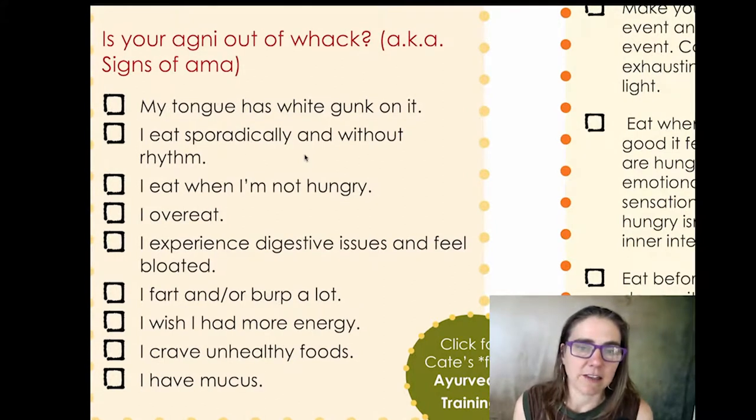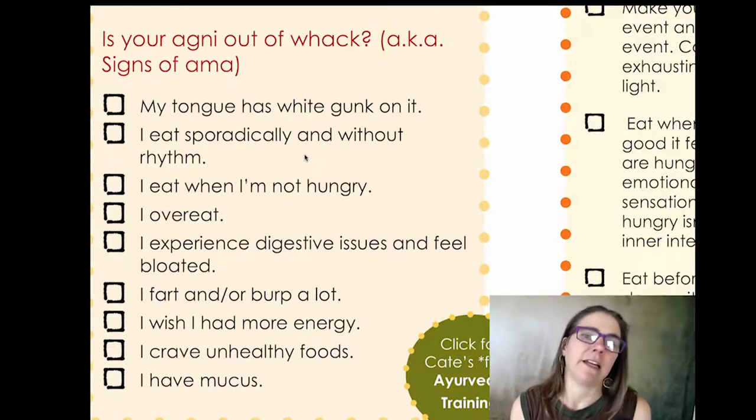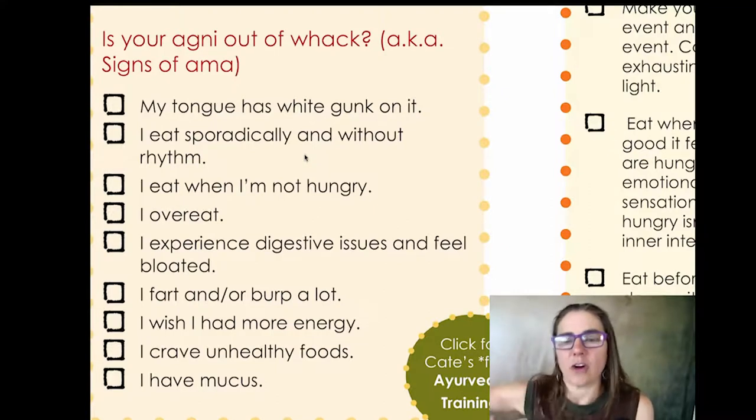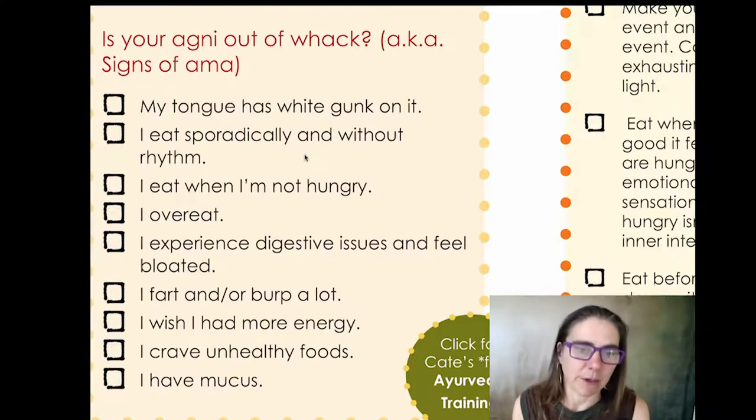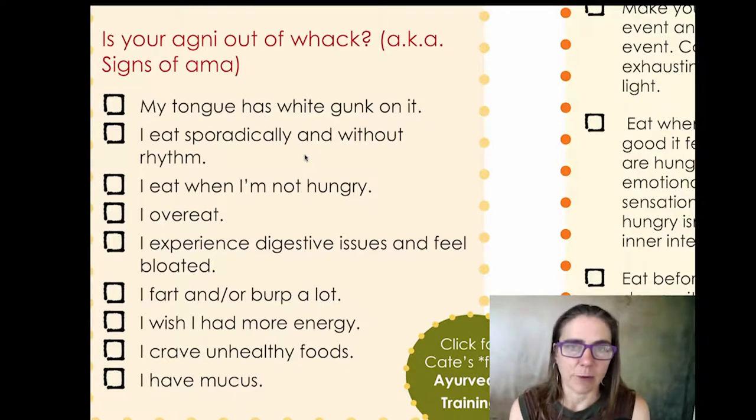And so in the last video, we went a bit into the different qualities or what we say in Ayurveda is Gunas. What are the different qualities involved in your allergies? Is there dryness? Is there stickiness? Is there a heat-based inflammation? And now what we're going to look at is, is there Amma? So number one, my tongue has white gunk on it. You might remember to the last slide where I said I had thick white coating on my tongue. I eat sporadically and without rhythm that can naturally give rise to Amma and eat when I'm not hungry. That's another sign that you'll probably be developing Amma.